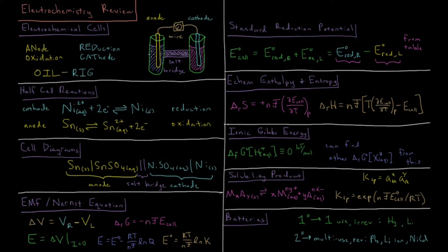We can break down this electrochemical reaction into two half-cell reactions, one at the cathode and one at the anode. An example of the cathode would be the reduction of nickel 2+ ions to nickel metal. An example of oxidation at an anode would be the oxidation of tin metal to form tin ions and electrons.